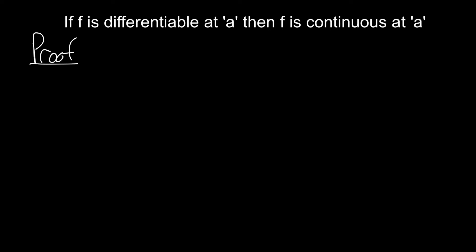So we start our proof by supposing f is differentiable. Suppose f of x is differentiable at a. Clearly, this means that f of a exists.